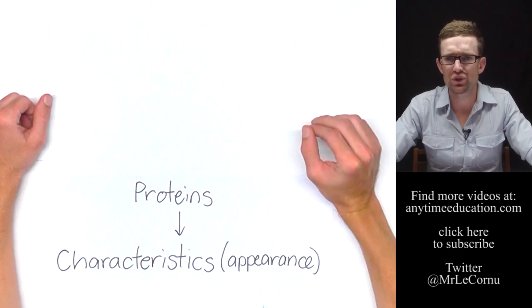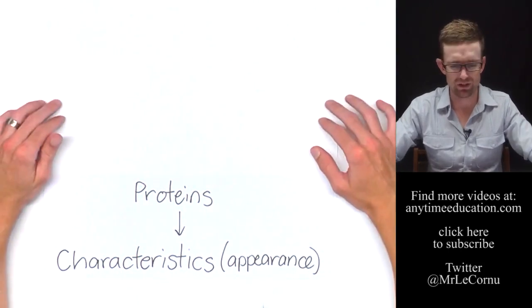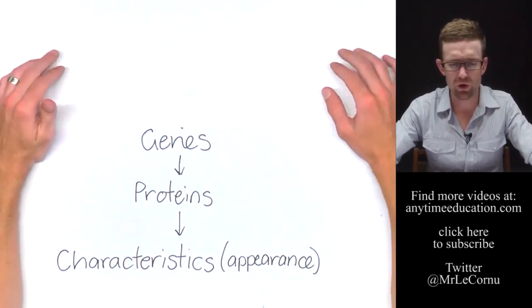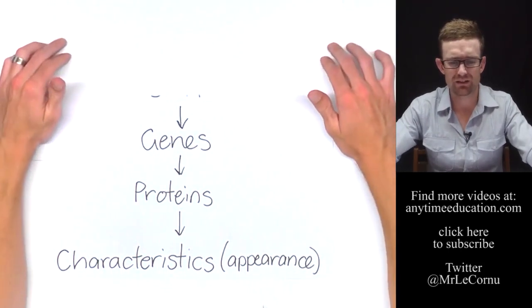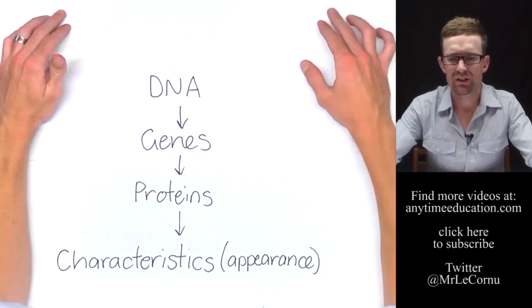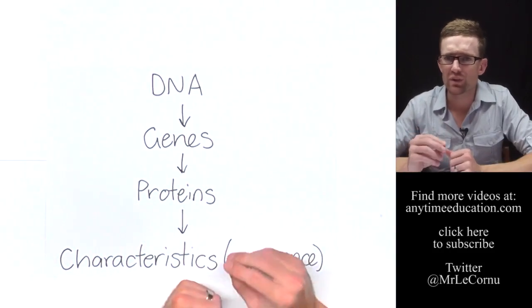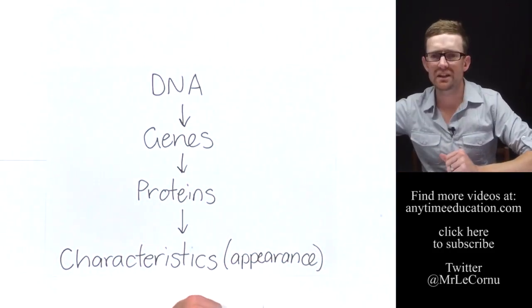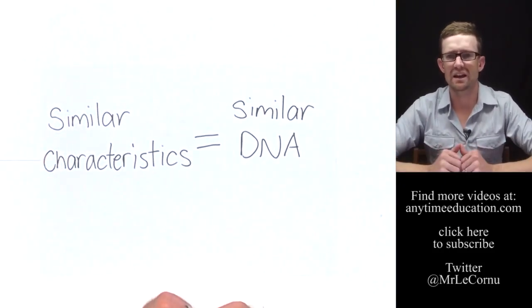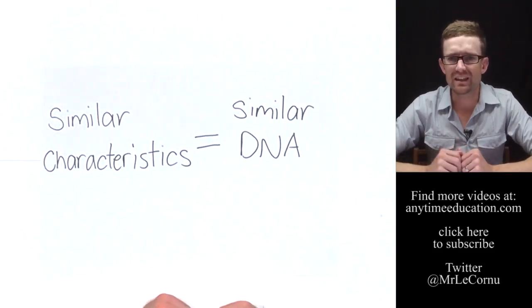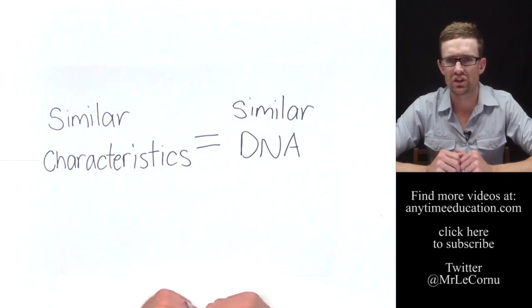And the proteins are produced in the cells of that organism and are coded for by genes. And the genes are found in the DNA. So the organisms that looked similar or had similar characteristics, they have similar DNA. And that is the key to determining evolutionary relationships.